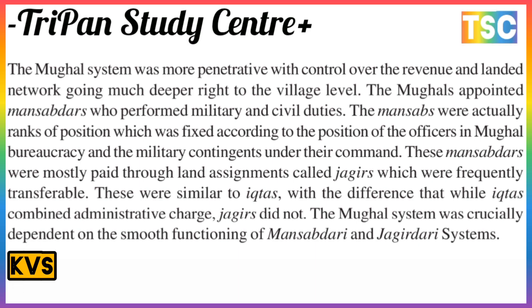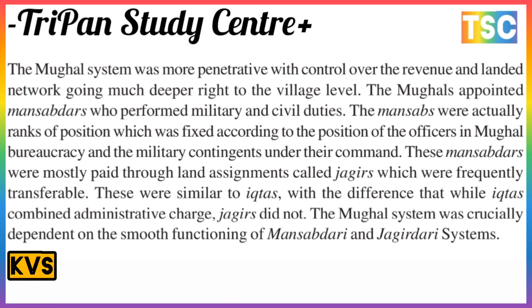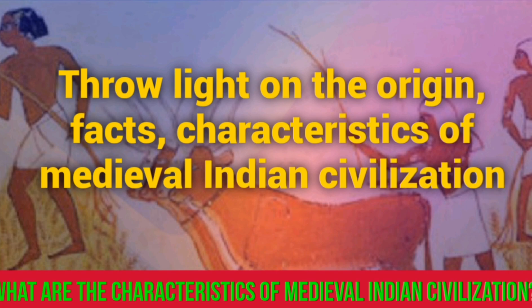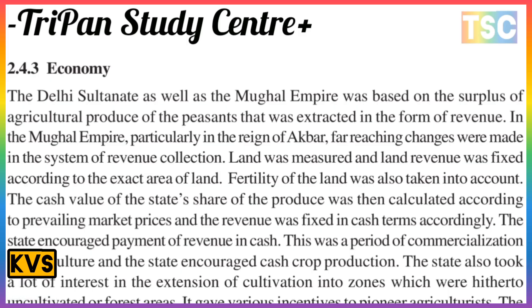The Mughal system was accurately dependent on the smooth functioning of the mansabdari and jagirdari system. The next point: economics. The economic condition of this period — the Delhi Sultanate as well as the Mughal Empire — was based on the surplus of agricultural produce of peasants, which was extracted in the form of revenue.